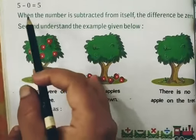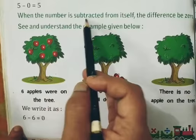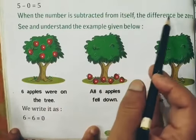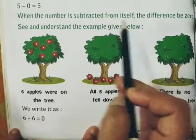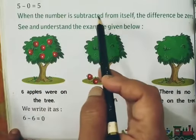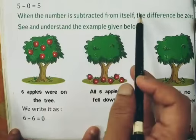Now we will move to the next example. When a number is subtracted from itself, the difference is zero. See and understand the example given below.